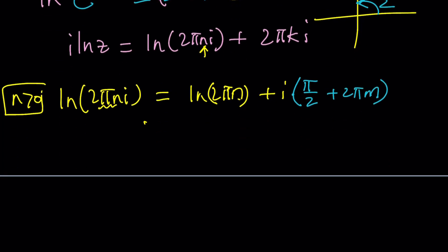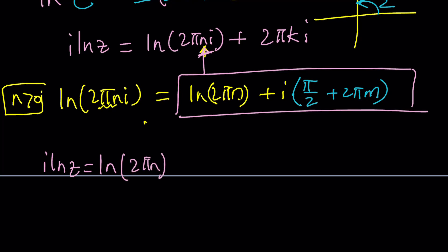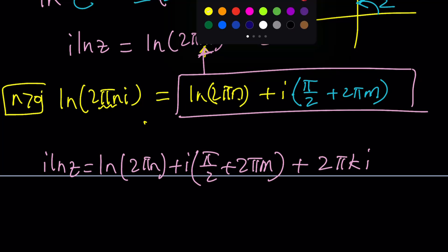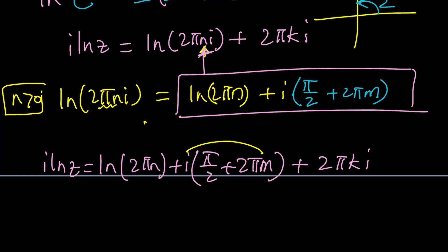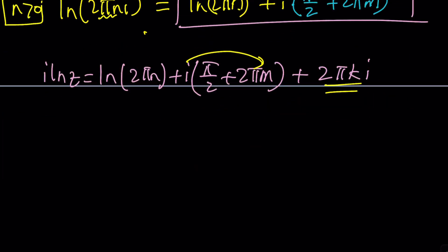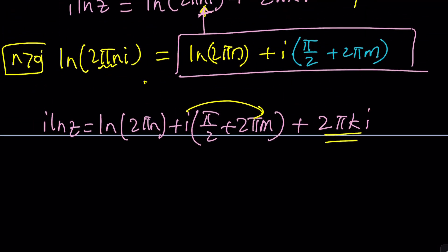Let's simplify this. This is actually ln 2 pi n i. So I'm going to substitute that here and replace this whole thing with that. Then I get i ln z equals ln 2 pi n plus i times pi over 2 plus 2 pi m plus 2 pi k i. We kind of keep adding the same thing. But when you distribute, you're going to get 2 pi m i and we also have 2 pi k i. So we take out a common factor. It's 2 m and 2 k, which are two even integers. Their sum is also even. So we could get rid of one of those. I ln z equals ln 2 pi n.